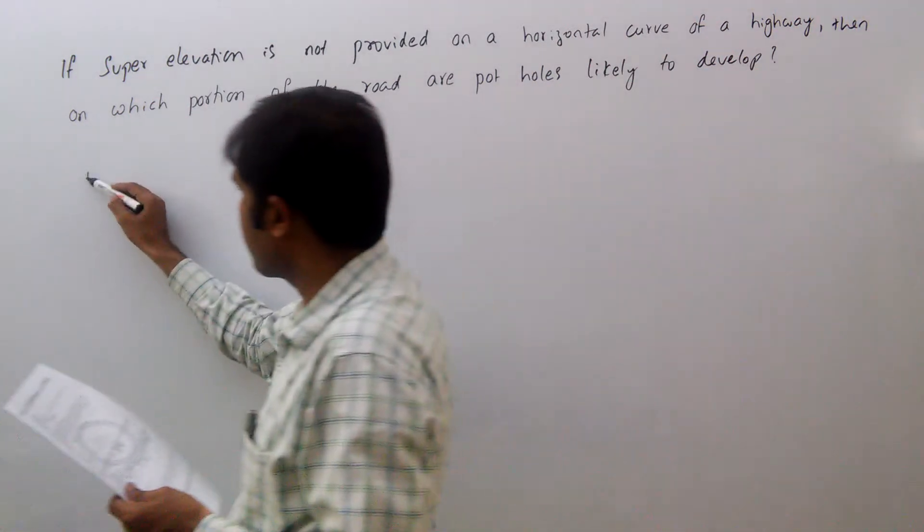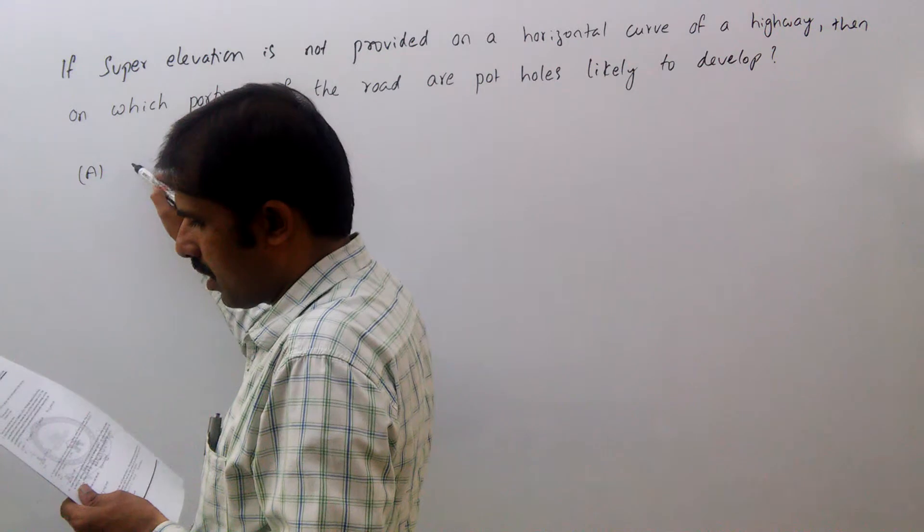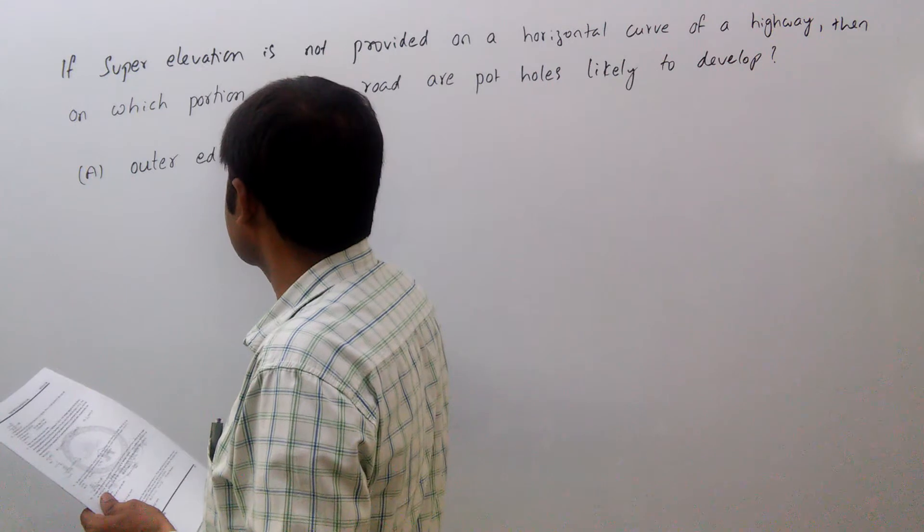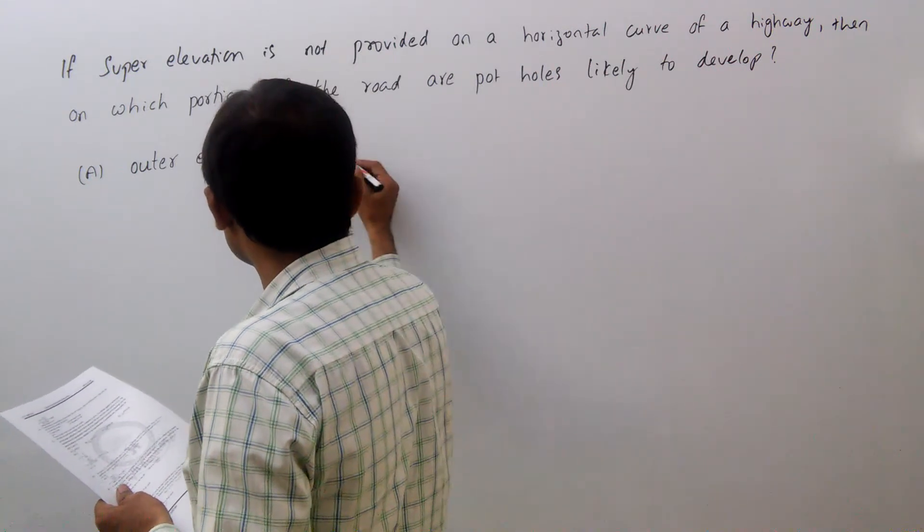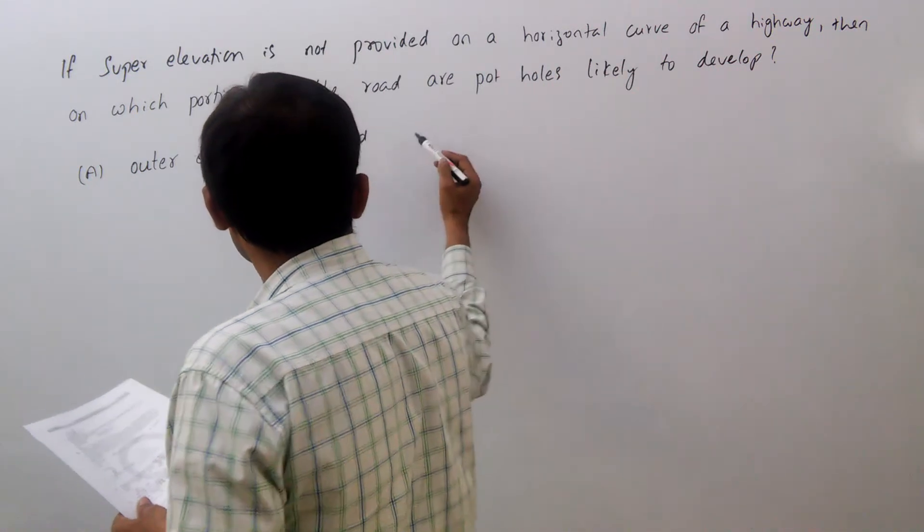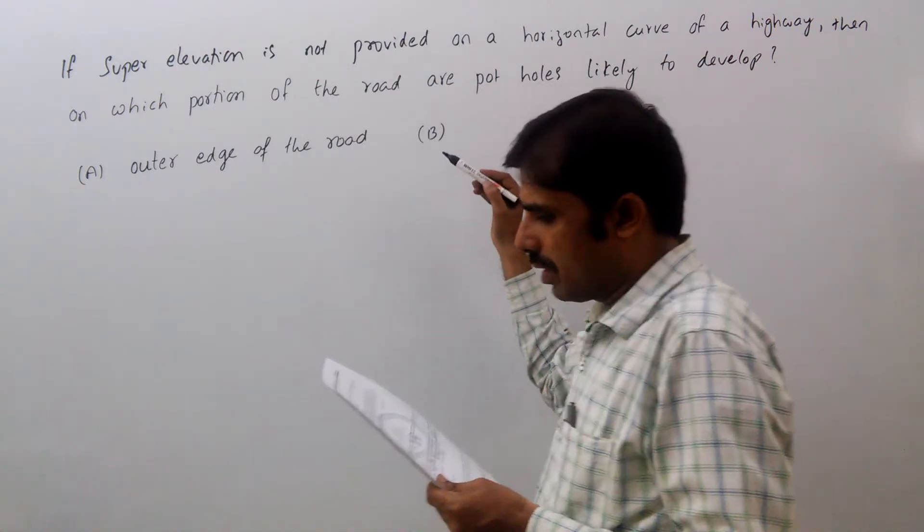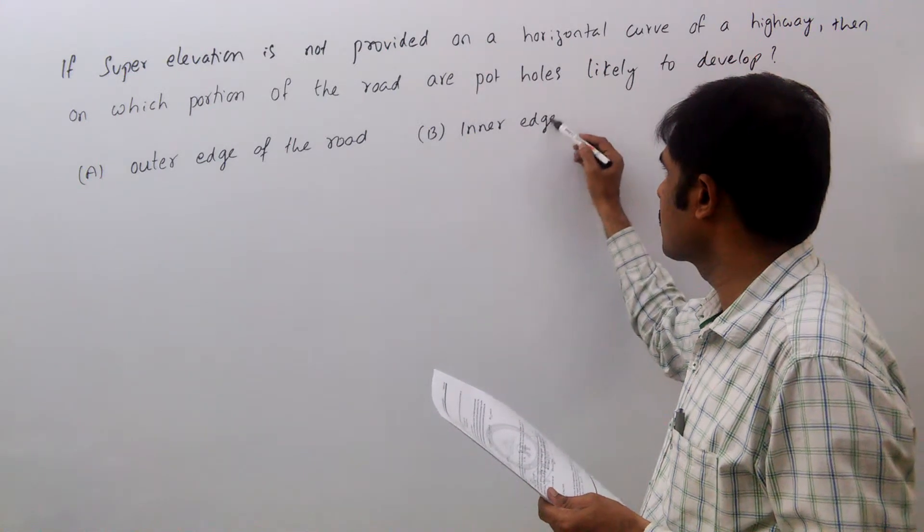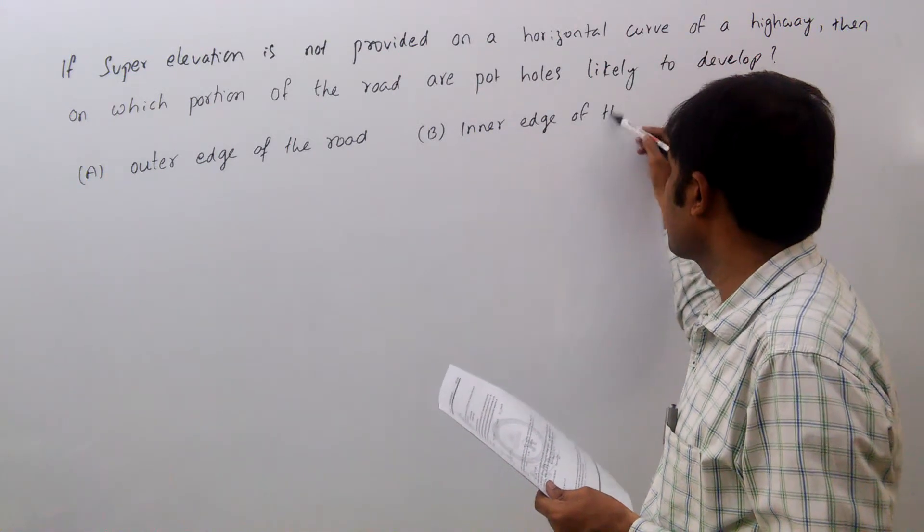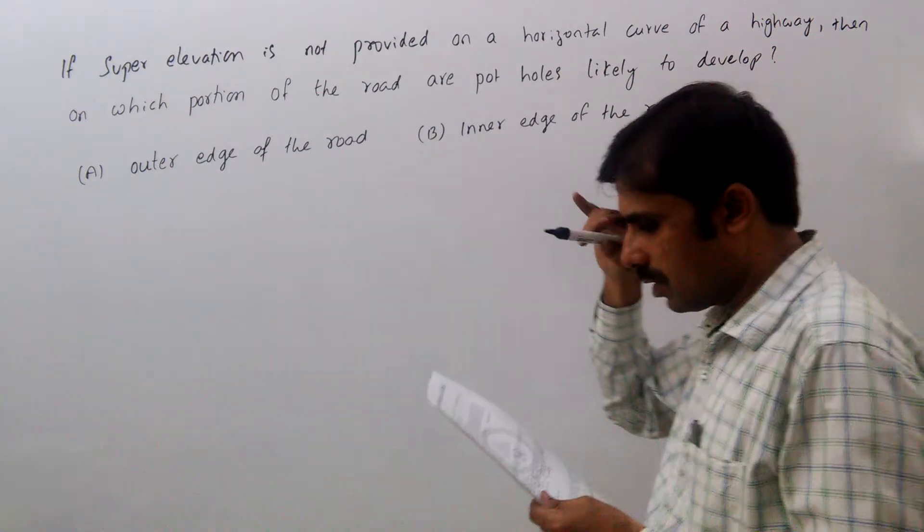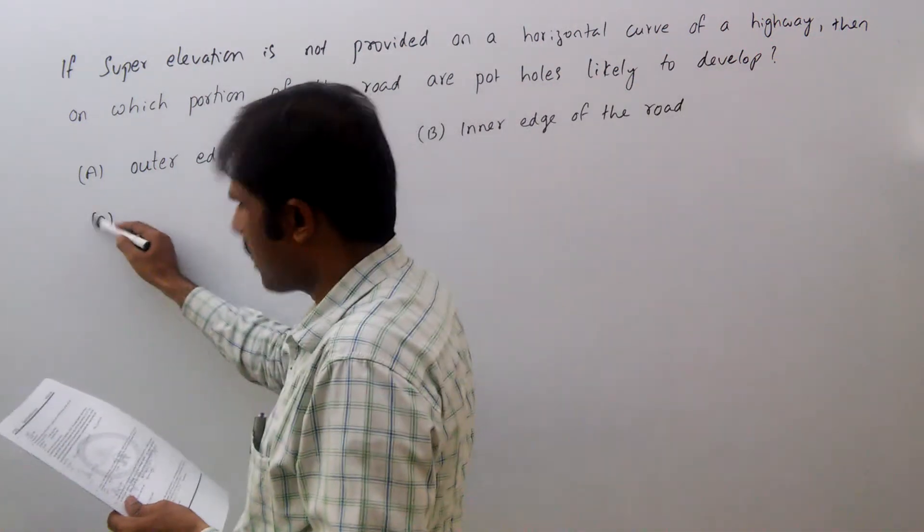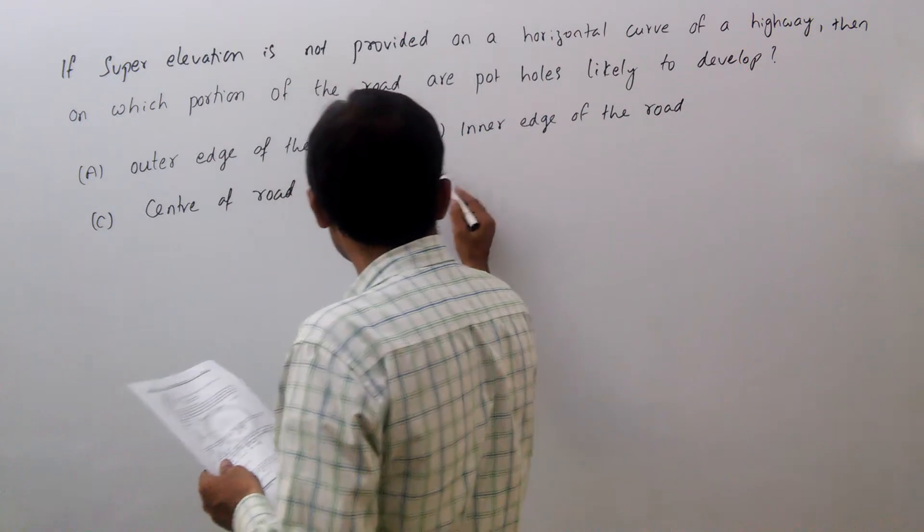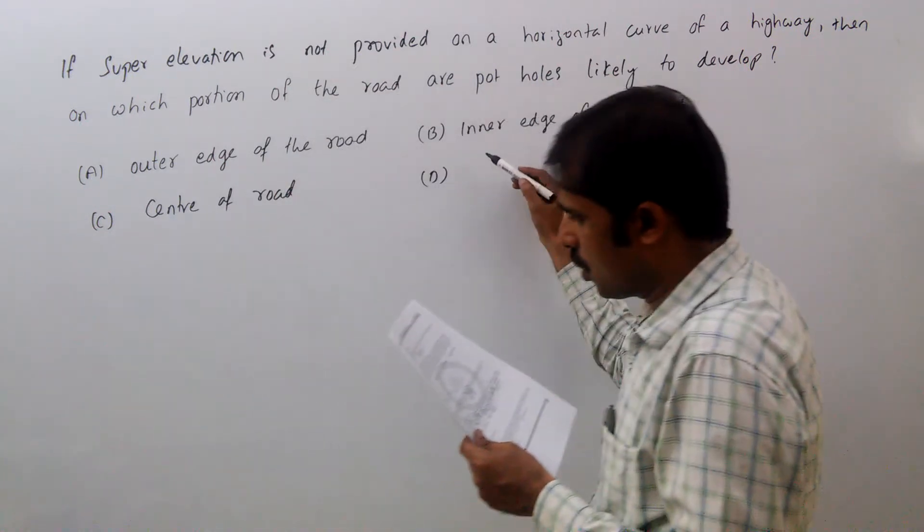Option A: Outer edge of the road. Option B: Inner edge of the road. Option C: Center of the road. Option D: Shoulder of the road.